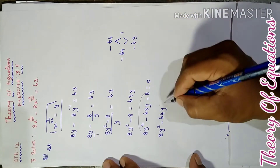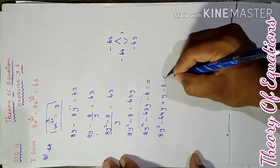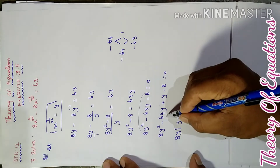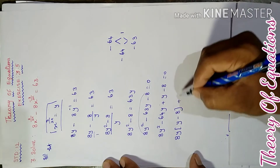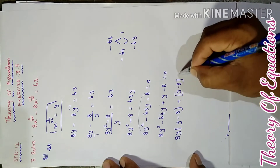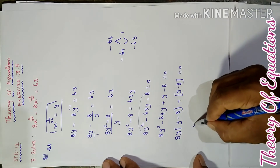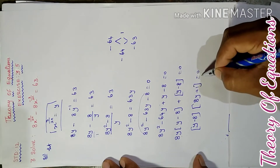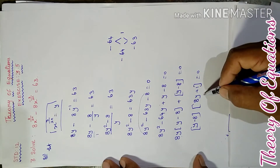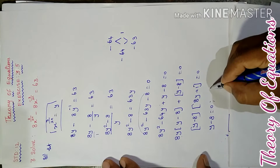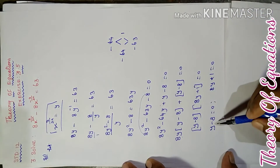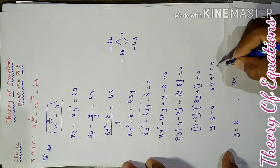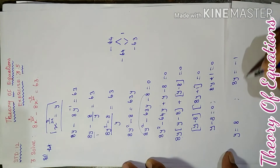So we split: 8y square minus 64y plus 1y minus 8 equal to 0. Grouping the first two terms: 8y(y minus 8) plus 1(y minus 8) equal to 0. Therefore (8y plus 1)(y minus 8) equal to 0. So y equal to 8 or y equal to minus 1 by 8.